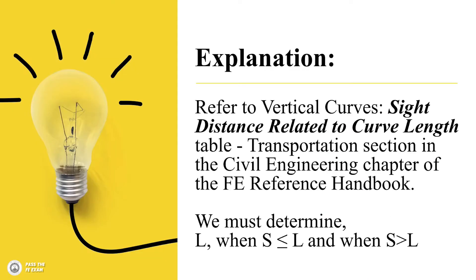Let's jump into the solution. We're going to need to utilize the table entitled 'Sight Distance Related to Curve Length' in the transportation section of the civil engineering reference chapter of the FE Reference Handbook. We must determine the length when the stopping sight distance is less than or equal to the length, and when it's greater than the length, because we don't know which scenario it will be — so we have to do a trial.